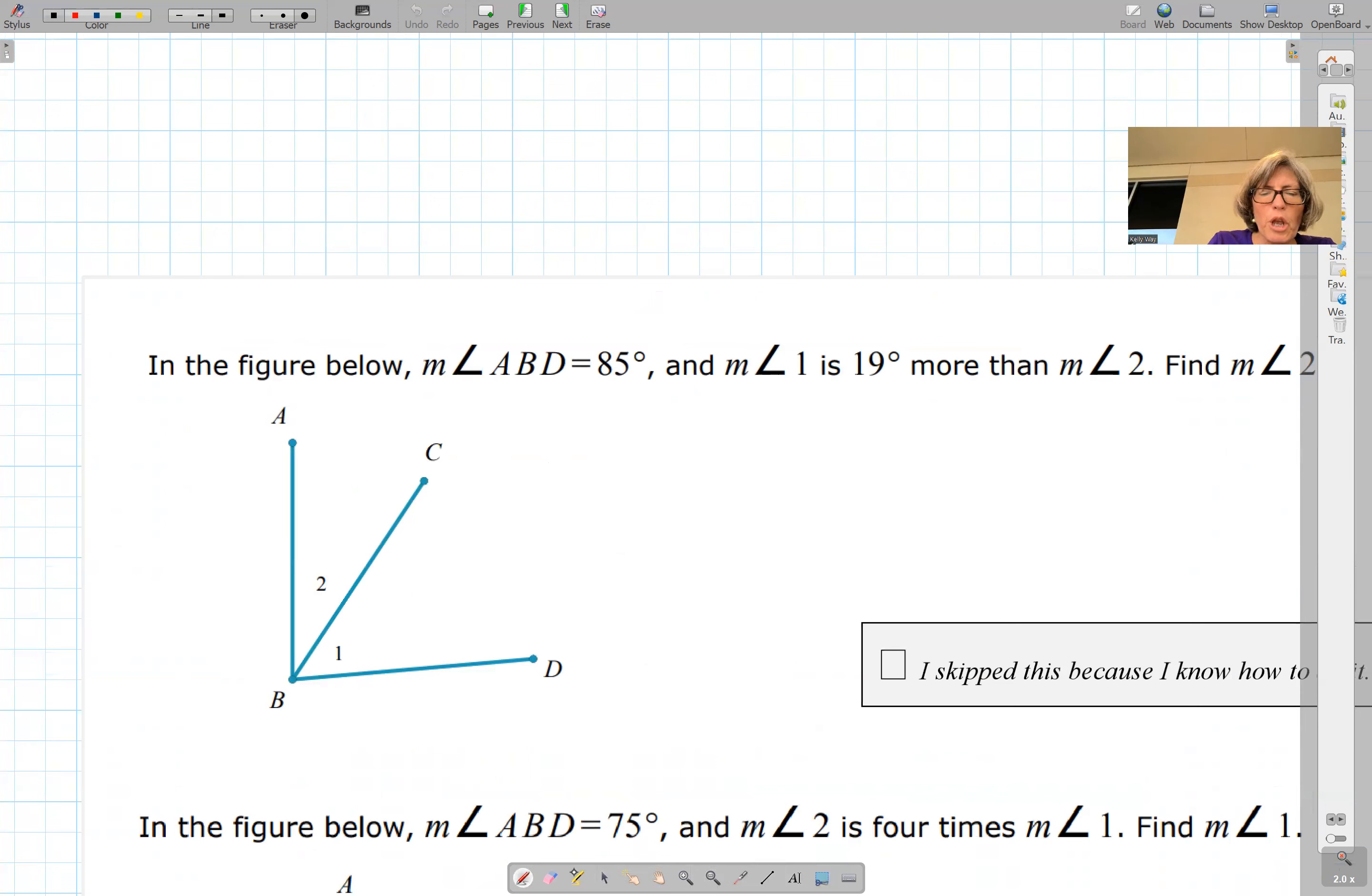It says in the figure below, the measure of angle ABD is 85. The measure of angle 1 is 19 more than angle 2. When you're comparing one thing to the other, the something else is going to be your variable x.